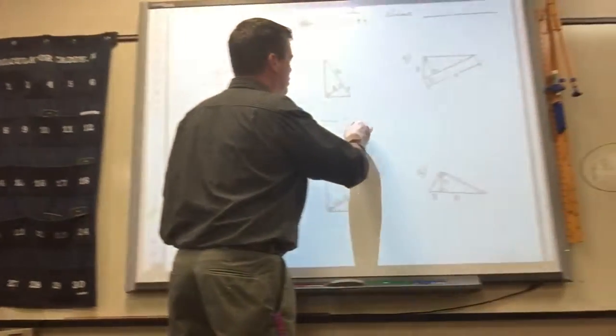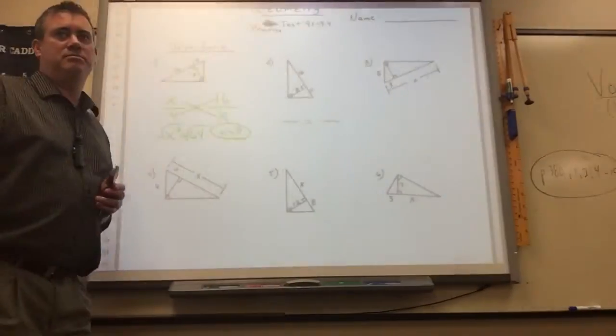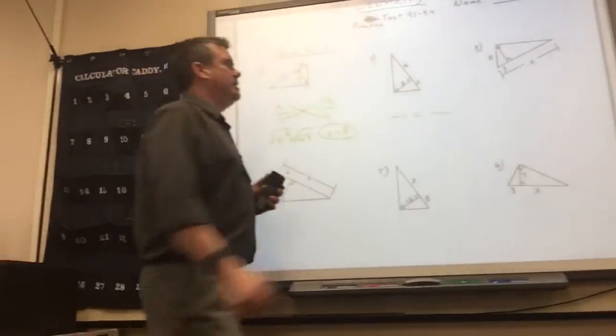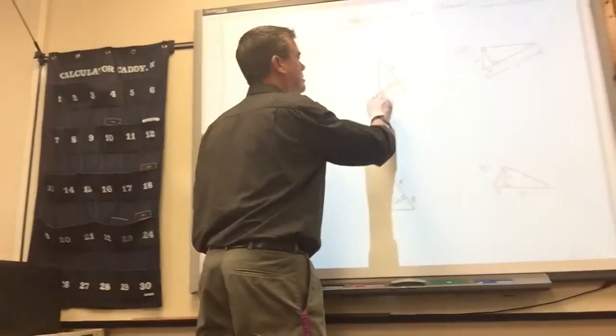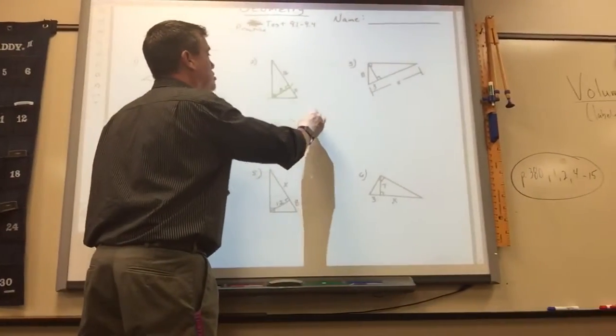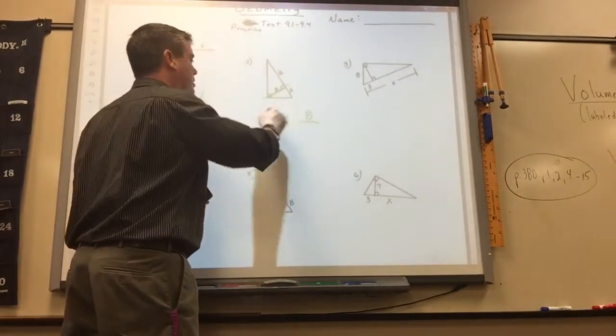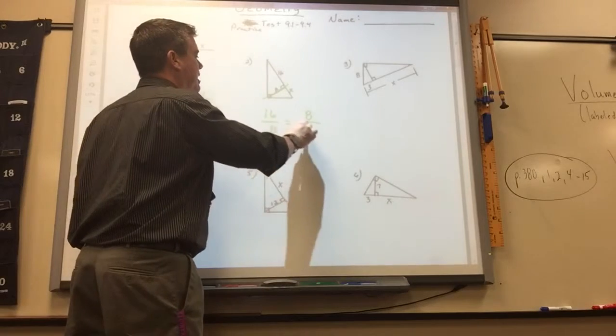In number 2, which one is the geometric mean? 8. So when it's that piece, you put each part in there — 16 and x.